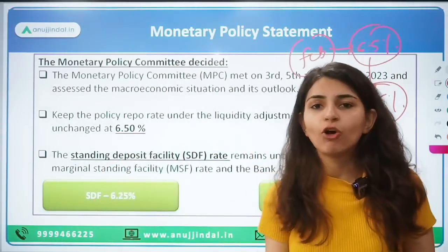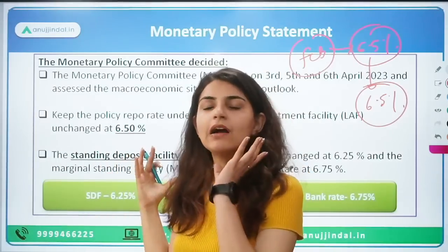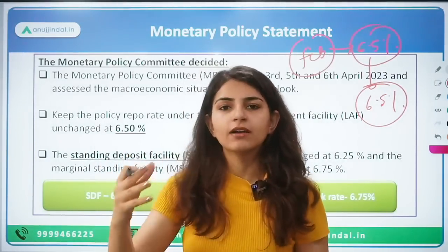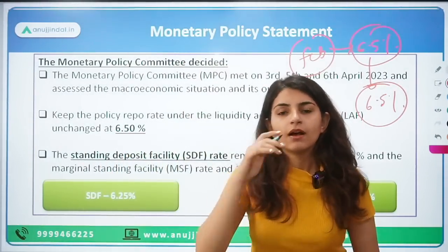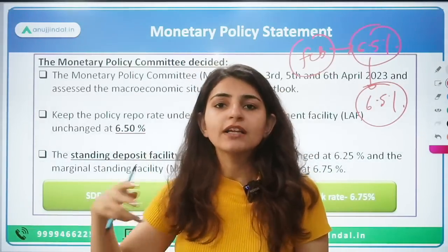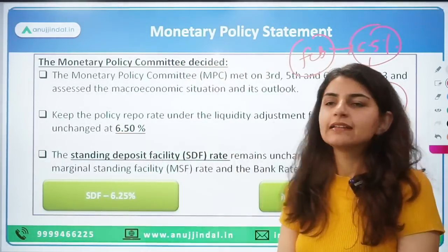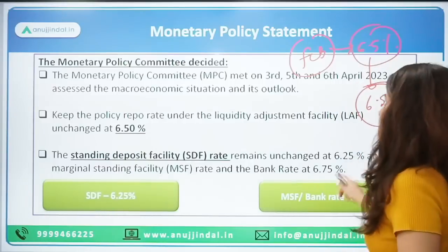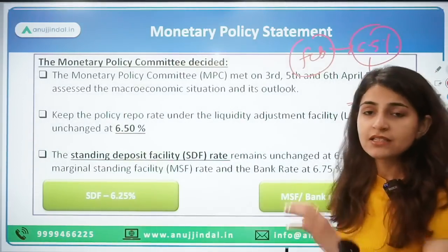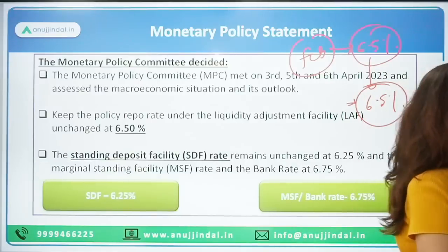The stance will also be the same as the previous stance — that is, calibrated withdrawal. Withdrawal of accommodation that was provided during COVID, the pandemic, and even after the Russia-Ukraine war, when RBI was focusing on injecting liquidity into the economy. Just like the last monetary policy statement, this one also targets calibrated withdrawal of that accommodation.